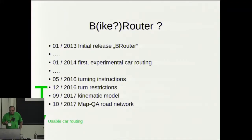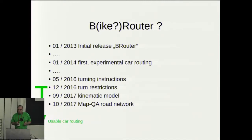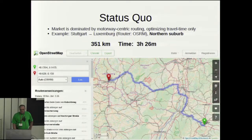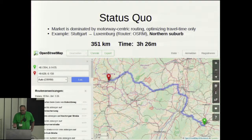BRouter always had a car option, but in the last years it was some sort of experimental mode and was not really a serious option. This only changed in the last one or two years when I started adding features needed for car routing to make it a serious option. Here is an example for routing with the Open Source Routing Machine from Stuttgart to Luxembourg — this is just the result you expect: it follows the motorway and you need three and a half hours.